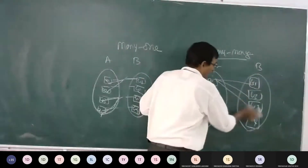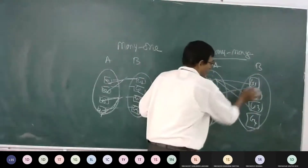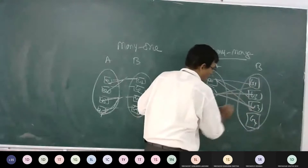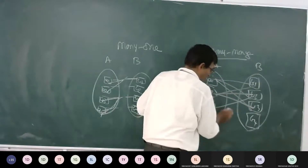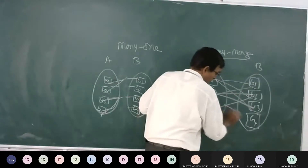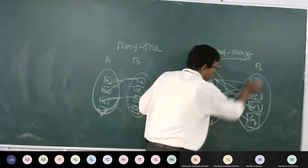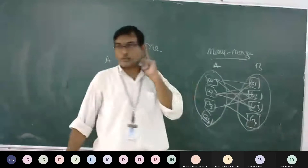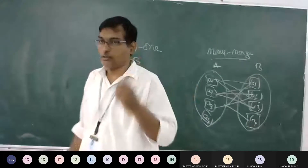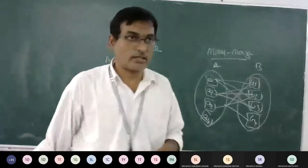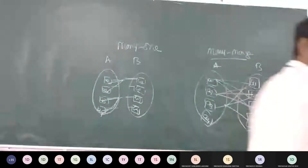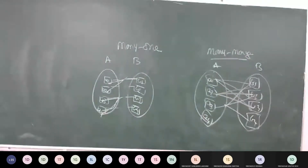We can use any combination, and we say there is a mapping cardinality between many-to-many.